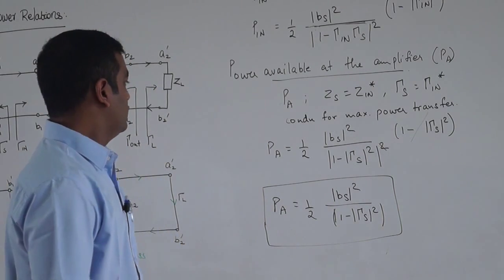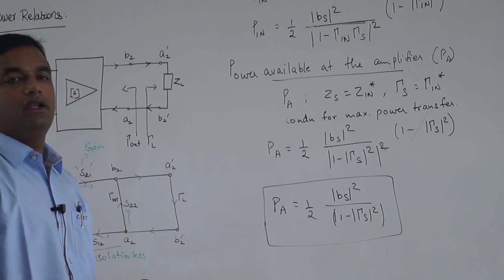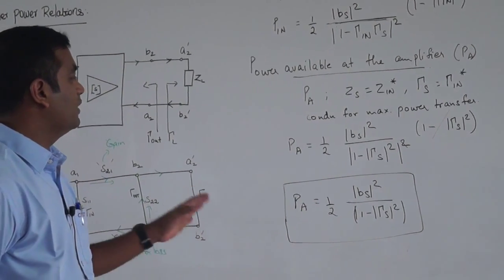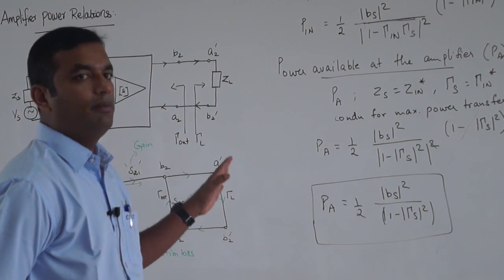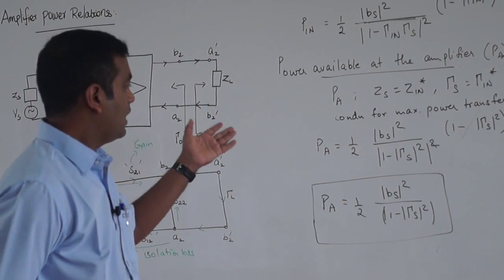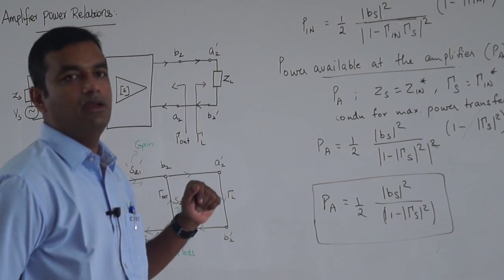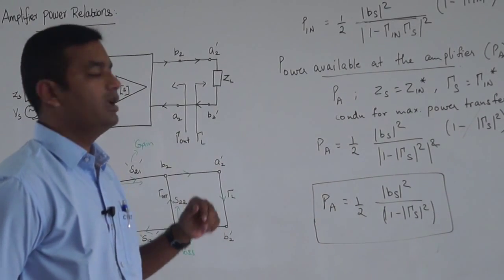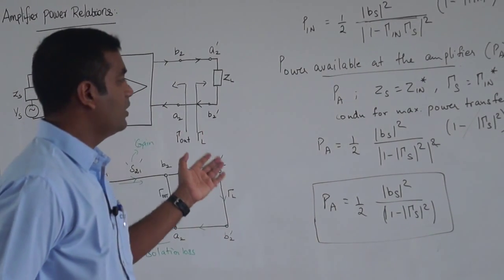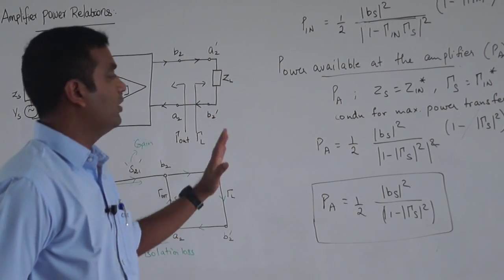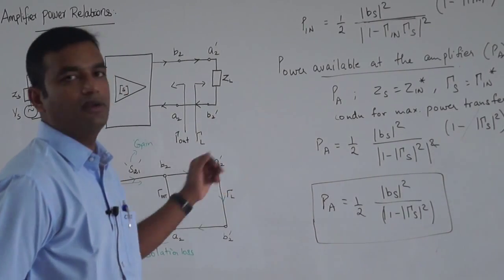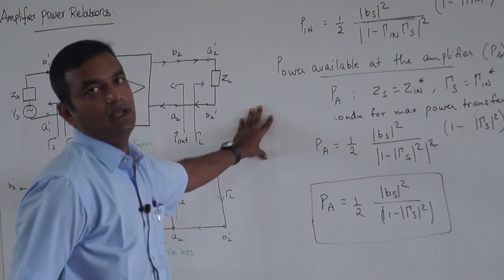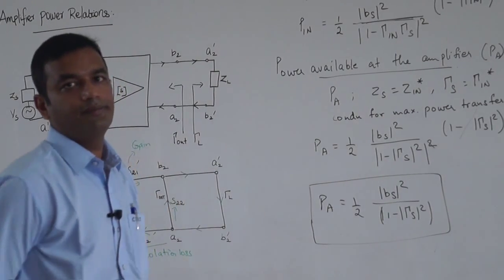We will stop here. In the next class we will continue deriving the amplifier gain, discuss unilateral gain, and cover the noise figure of the amplifier. Thank you.